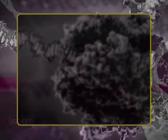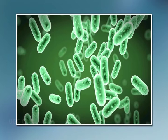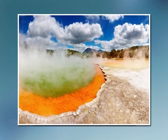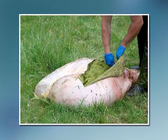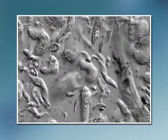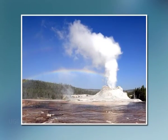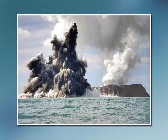Besides prokaryotes and eukaryotes, there is another kingdom — kingdom archaea. Members of this group resemble bacteria in morphology but have unique cell membrane and cell wall structures. Surprisingly, archaea are no more closely related to bacteria than they are to eukaryotes. Archaea represent a widely diverse group with one thing in common: they all live in extreme environments. Some of the best known archaea live in cattle rumens and termite guts, while others live in hot springs, geysers, and submarine volcanoes.